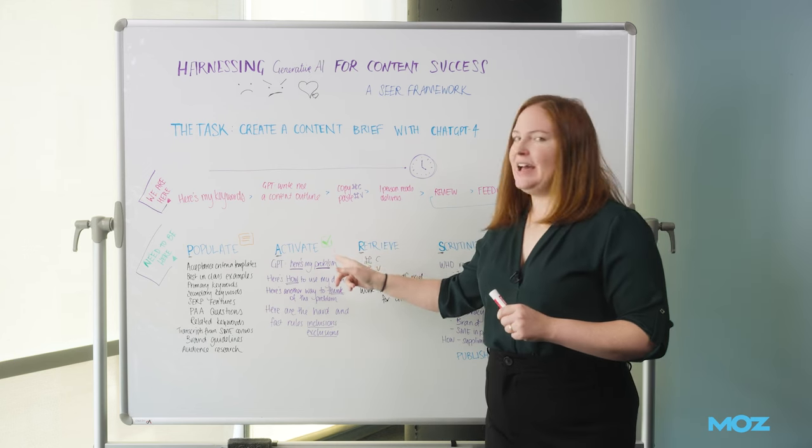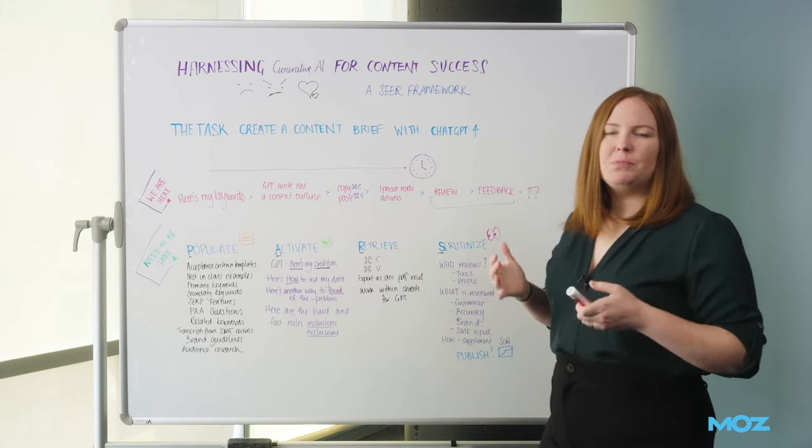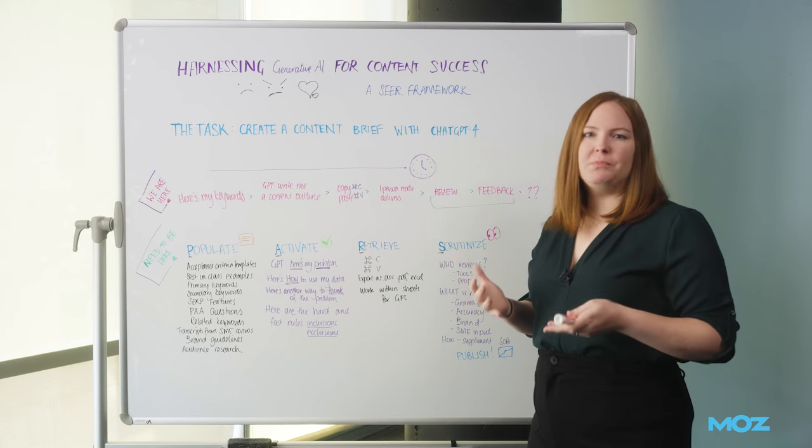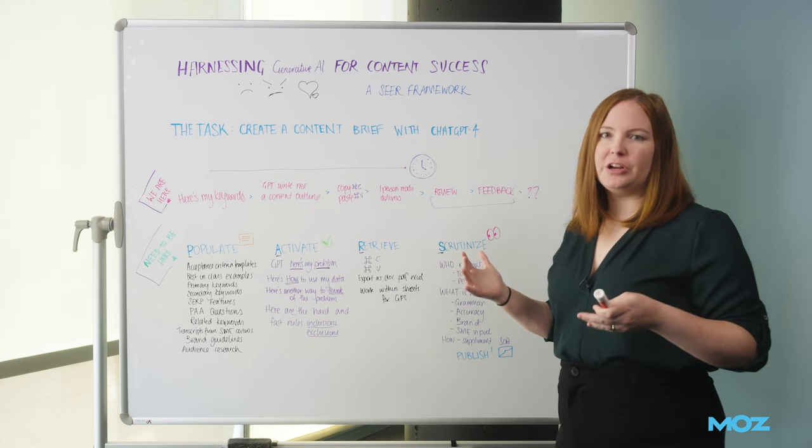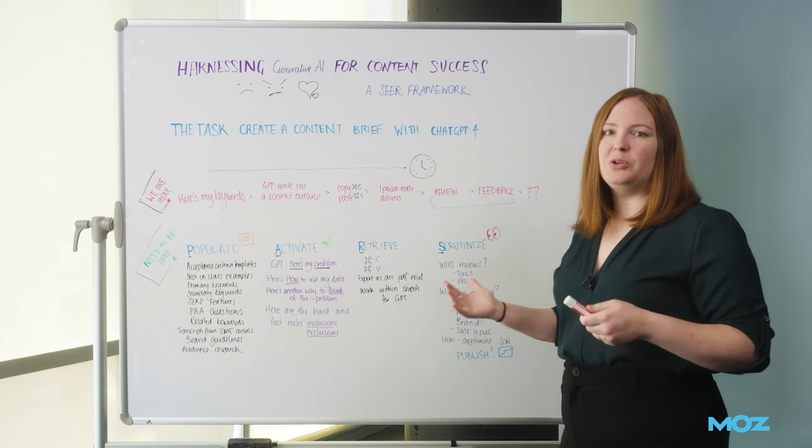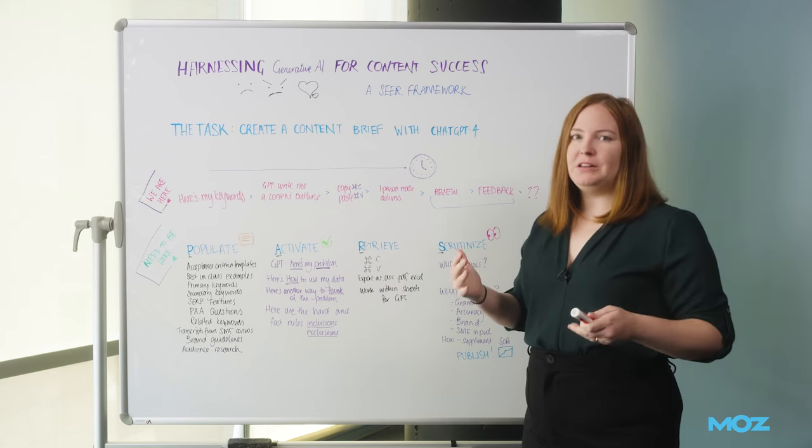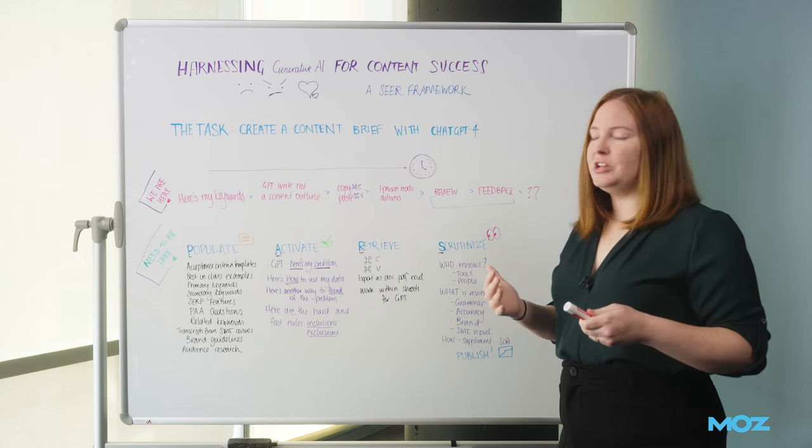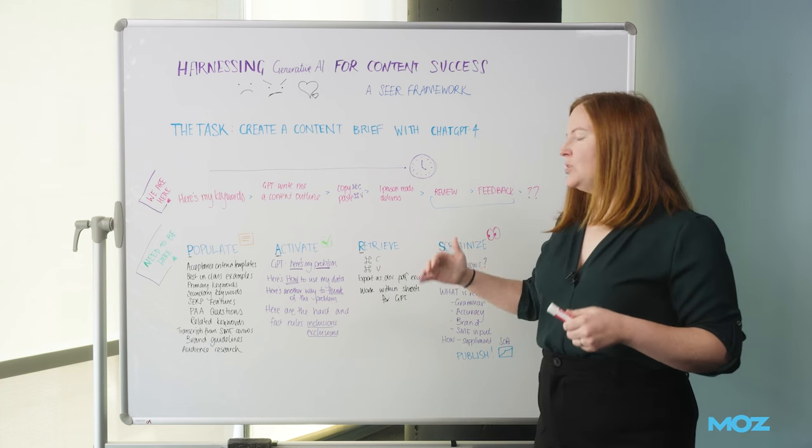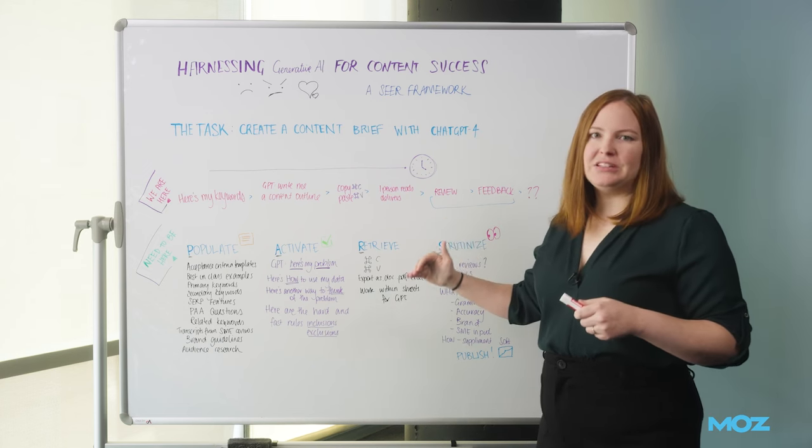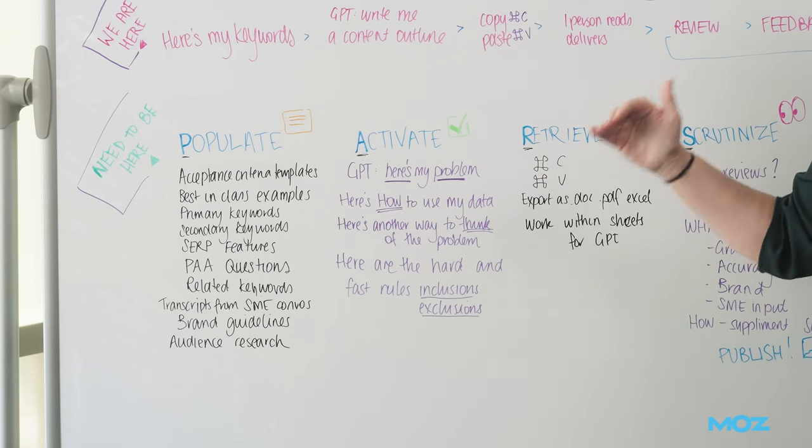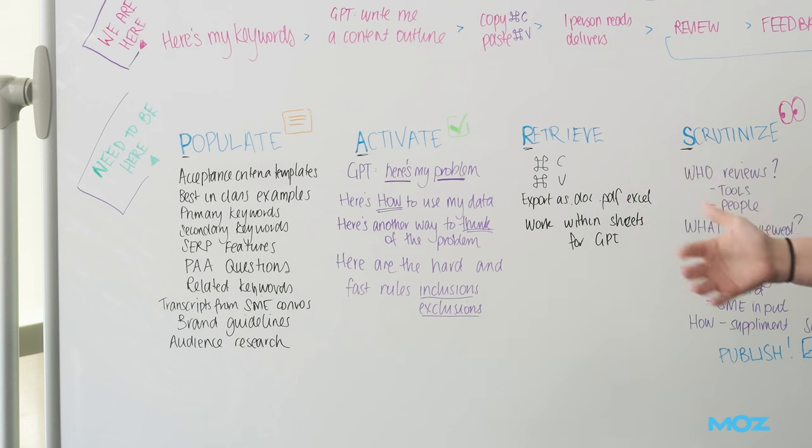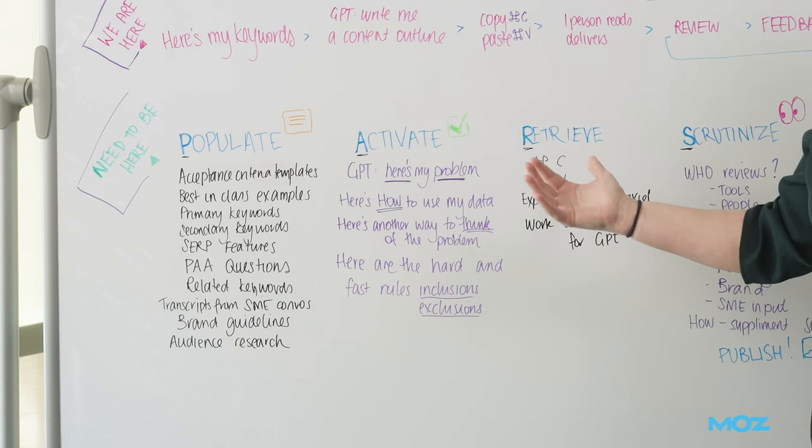The second is Activate. And this is basically what people are referring to when they talk about prompt engineering. So there's a ton of information out there about prompt engineering. Mike King has a great resource that he's built for the community that you should definitely check out when it comes to prompt engineering. So I'm just going to focus on the high-level steps that we're taking here at Seer. The first thing is you want to make sure that you are diagnosing the problem that GPT needs to solve for you.